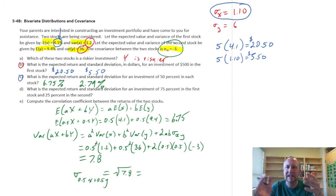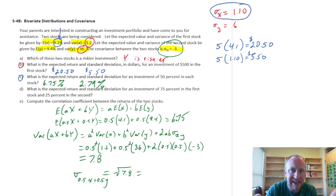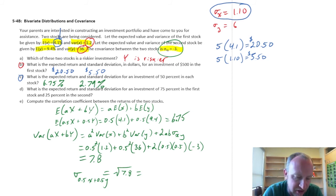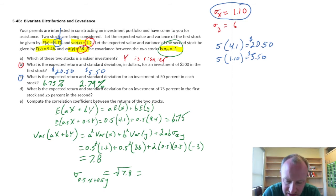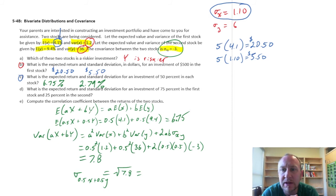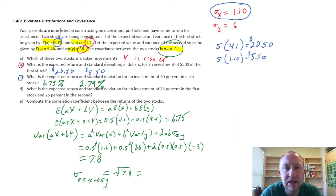By diversifying our portfolio 50/50 between these two stocks, I get a rate of return that is better than the lowest but not quite as good as the highest — and it also manages risk. I'm getting a higher return than if I were all-in on the lower-return stock, while my standard deviation drops substantially to 2.79%. So by diversifying, we get a little better return and a little less risk.